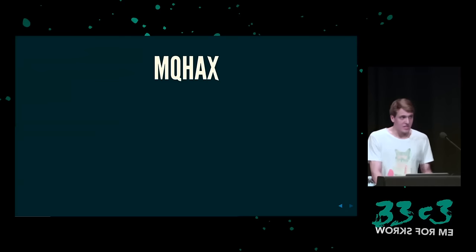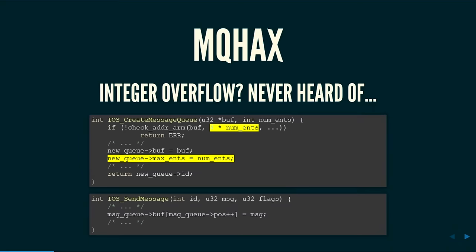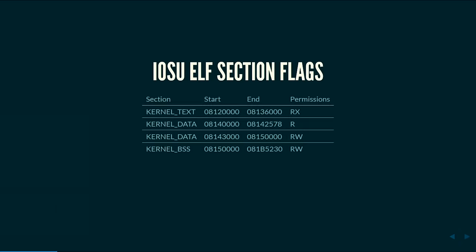Was wir herausgefunden haben, nennt sich MQ-Hacks — Message-Queue-Hacks — das stürzt einfach niemals in Overflows. Der Syscall heißt Create-Message-Queue und macht einen Buffer mit einer Anzahl von Buffer-Einträgen. Jeder Buffer-Eintrag ist 4 Bytes groß. Wenn ihr die Adresse überprüft, dann siehst du die Anzahl der Einträge mit 4 Bytes multipliziert. Damit können wir einfach die maximale Nummer von Einträgen in der Message-Queue schreiben und dann den Send-Message-Syscall senden.